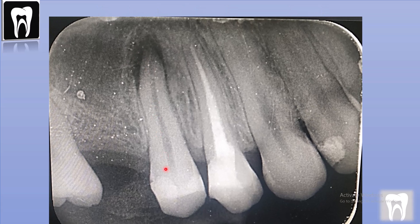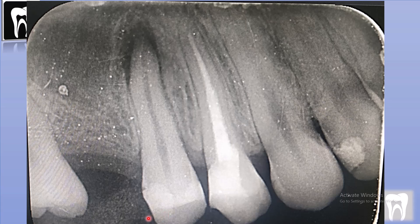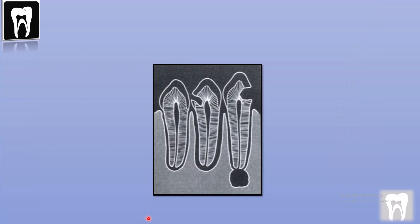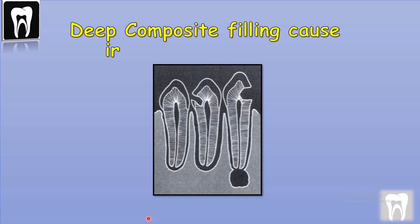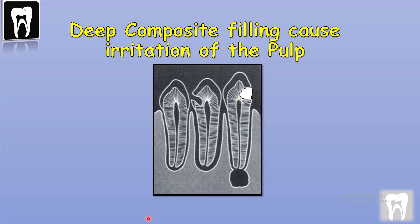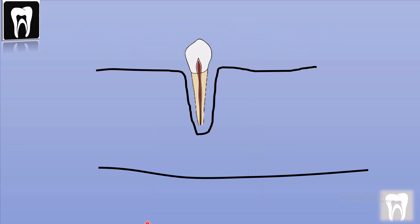If you look closer, you can see this deep composite filling. Composite filling can cause tooth necrosis, especially when the filling is so close to the tooth pulp. So the leftover microorganisms and the irritation of the filling start an inflammatory process. The inflammatory products are acidic and they resorb the periapical bone.